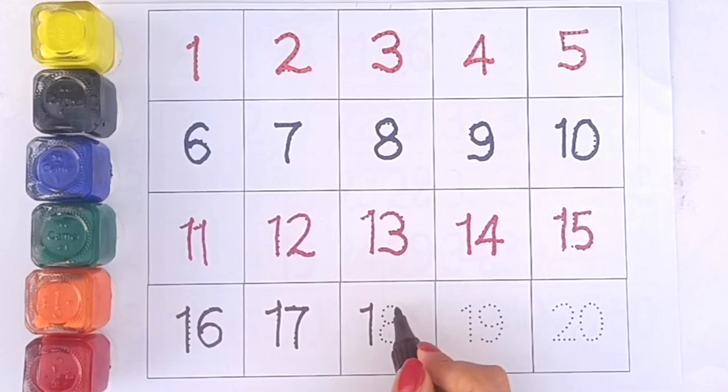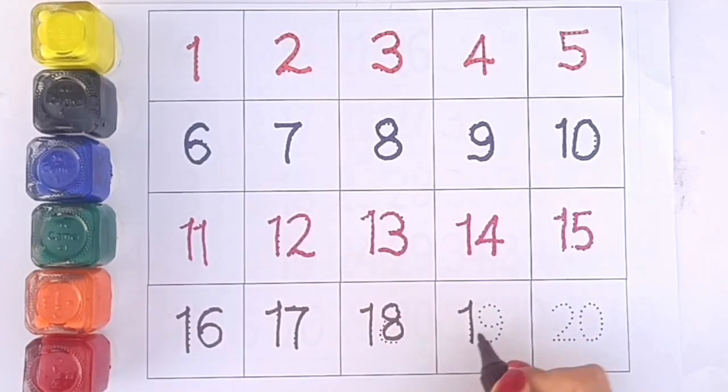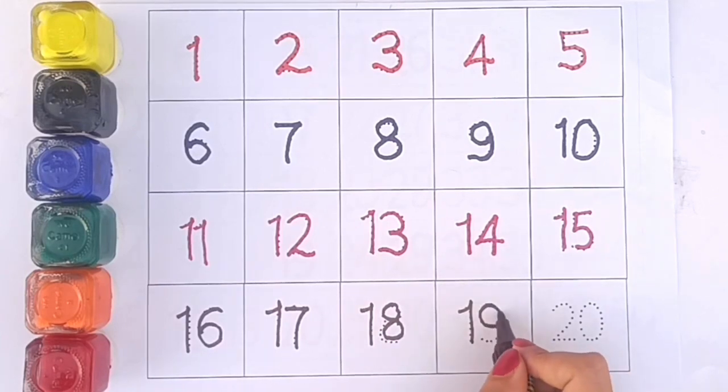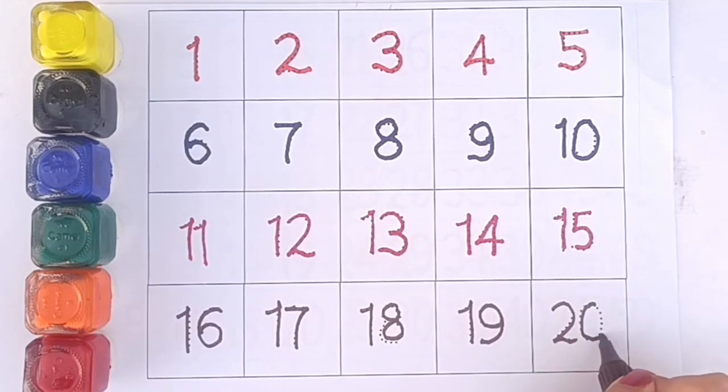We have one-eight, eighteen. We have one-nine, nineteen. And the last is two-zero, twenty.